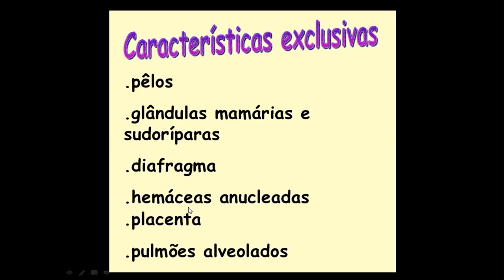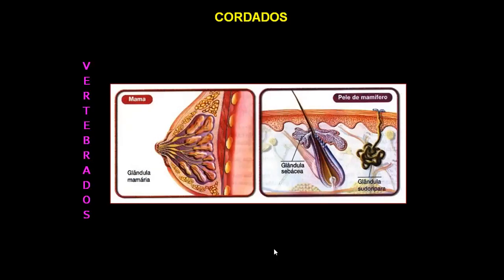As hemácias, que são os glóbulos vermelhos, em todos os vertebrados até as aves têm núcleo. No mamífero, a hemácia não tem núcleo — é uma adaptação que favorece o transporte de oxigênio, porque ela tem mais espaço disponível. A placenta é exclusiva de mamífero. E os pulmões são extremamente evoluídos, alveolares, com uma grande área de absorção. As características básicas são a glândula mamária, o leite como alimento do filhote, e os pelos.